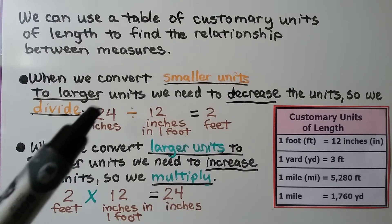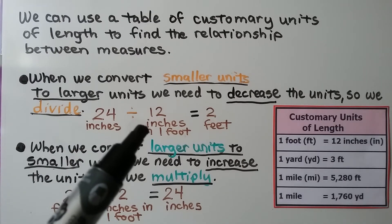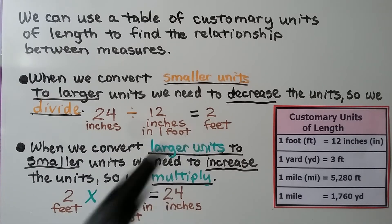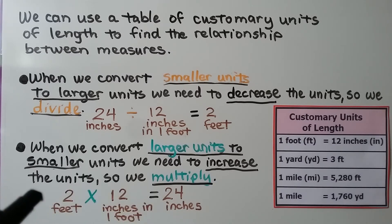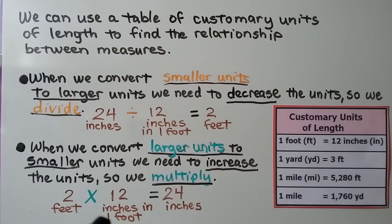Twenty-four inches divided by twelve inches in one foot is equal to two feet. When we convert larger units to smaller units, we need to increase the units, so we multiply. Two feet times twelve inches in one foot equals twenty-four inches.